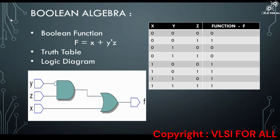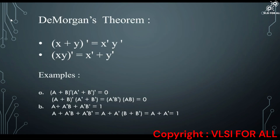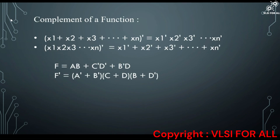Our next concept is De Morgan's theorem. This theorem contains two main rules: (1) (X plus Y)̄ = X̄ · Ȳ, and (2) (X · Y)̄ = X̄ plus Ȳ. These are the basic rules of De Morgan's theorem with examples.